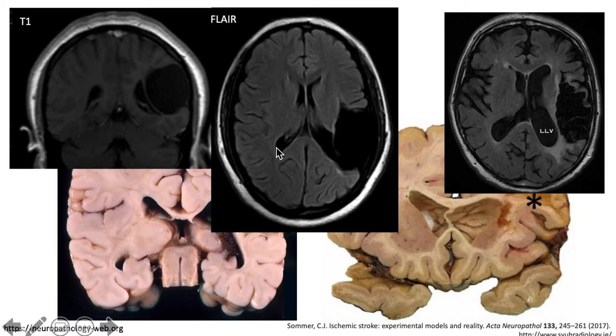If the insult occurs later in gestation, say more than 20 weeks, the glial cells or the supporting cells are able to form gliosis or scar, as we can see here.